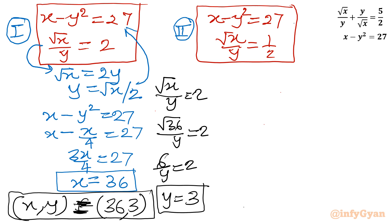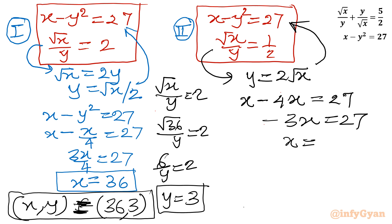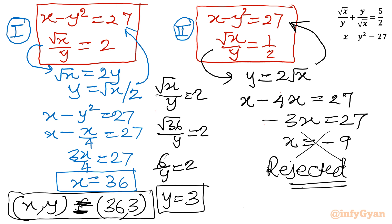Now for System 2, similarly y equals 2 root x. Substituting into x minus y squared equal to 27 gives x minus 4x equal to 27, so minus 3x equals 27 and x equals minus 9. We reject this solution as we are calculating real solutions and x must be positive. So only one solution exists: x comma y equal to 36 comma 3.